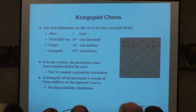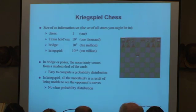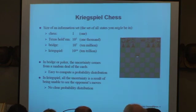Furthermore, in a game like Bridge or poker, the uncertainty comes from the deal of the cards, and you can put a probability distribution over how the cards might have landed. That makes it easier to do some of the calculations. In Kriegspiel, all of the uncertainty is a result of being unable to see the opponent's moves, and there's no clear probability distribution over those moves — so that makes things more difficult as well.